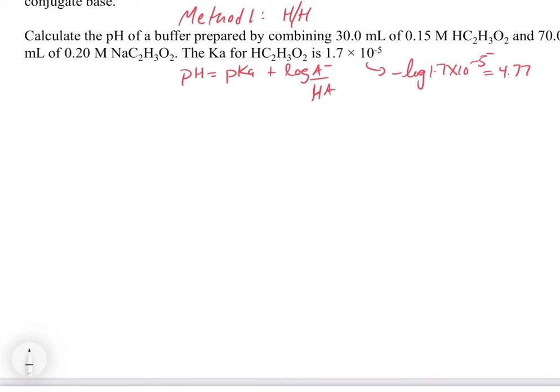So if you take negative log of the Ka, you get 4.77. So we're just going to add that in: pH is equal to 4.77 plus the log of A- over HA. And so now the next thing we need to get is we need to get these concentrations of A- and HA. And so you'll notice what this is, is this is a dilution problem. So what we basically have is we have 30 mL of the 0.15 molar acetic acid solution, and we have 70 mL of a 0.2 molar sodium acetate solution. If you want to draw this out kind of schematically, we take 30 mL of a 0.15 molar solution and we take 70 mL of a 0.2 molar solution. We pop them in and our new volume is going to be 100 mL.